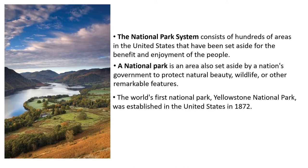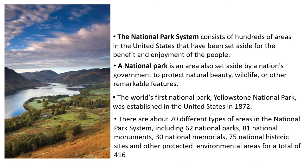The world's first national park, which was Yellowstone National Park, was established in the United States in 1872. There are 20 different types of areas in the national park system. That includes the 62 national parks, 81 national monuments, 30 national memorials, 75 national historic sites, and other protected environment areas, for a total of 416.